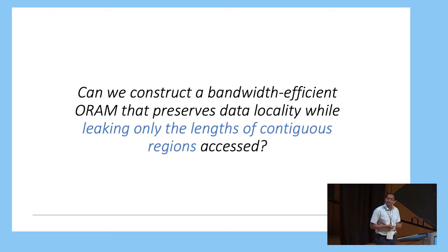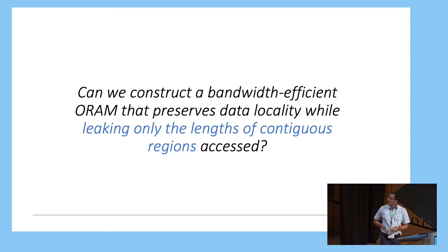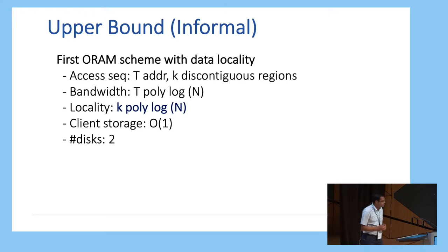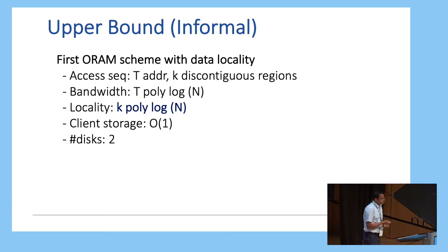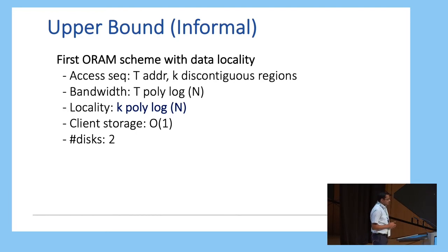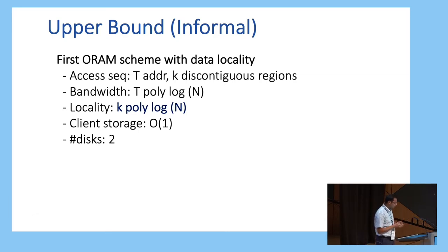The next question we ask is whether we can construct a bandwidth-efficient ORAM scheme that preserves data locality while only leaking the length of the contiguous regions that are accessed. Under such leakage, we show the first ORAM scheme with data locality. Specifically, if your access sequence makes T requests spanning K discontinuous regions, we show an ORAM scheme with bandwidth T times polylogarithmic in N. The key result is that locality only depends on the number of discontinuous regions, with a blowup of polylogarithmic in N, and it does not depend on T. We achieve this with constant client storage and, interestingly, using two disks instead of one for part of the computation.